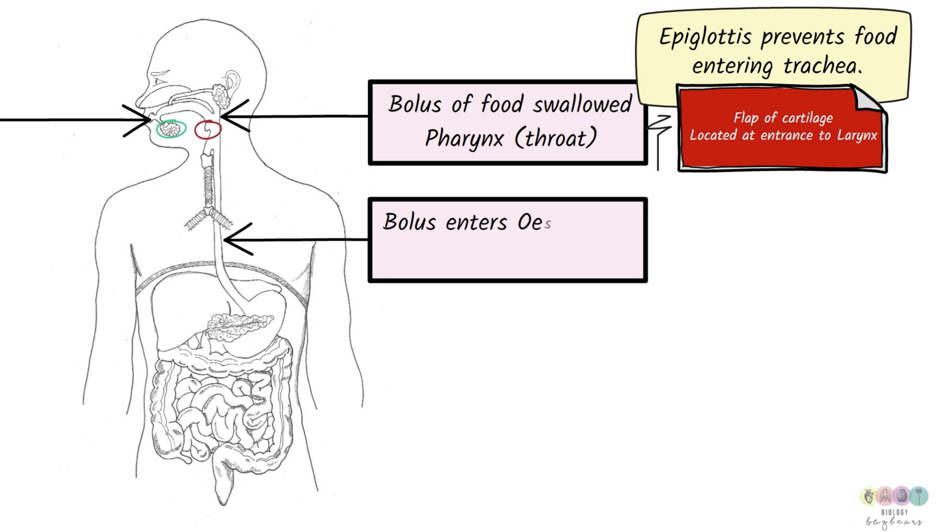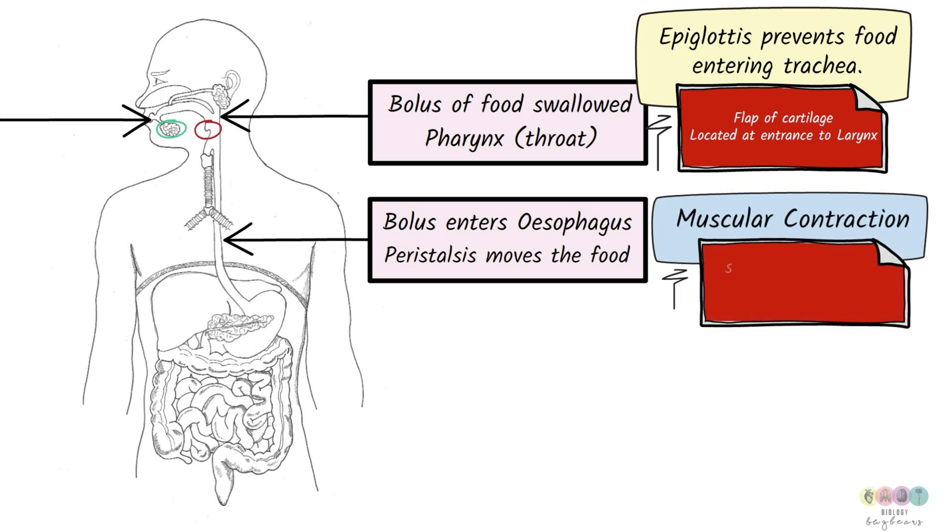So the food moves onwards down into the esophagus. And it's pushed onwards by peristalsis. These rhythmic waves of muscular contraction. Because the esophagus is made of smooth muscle. And so it can contract. The food is pushed onwards down through the esophagus. And eventually will make its way into the stomach.